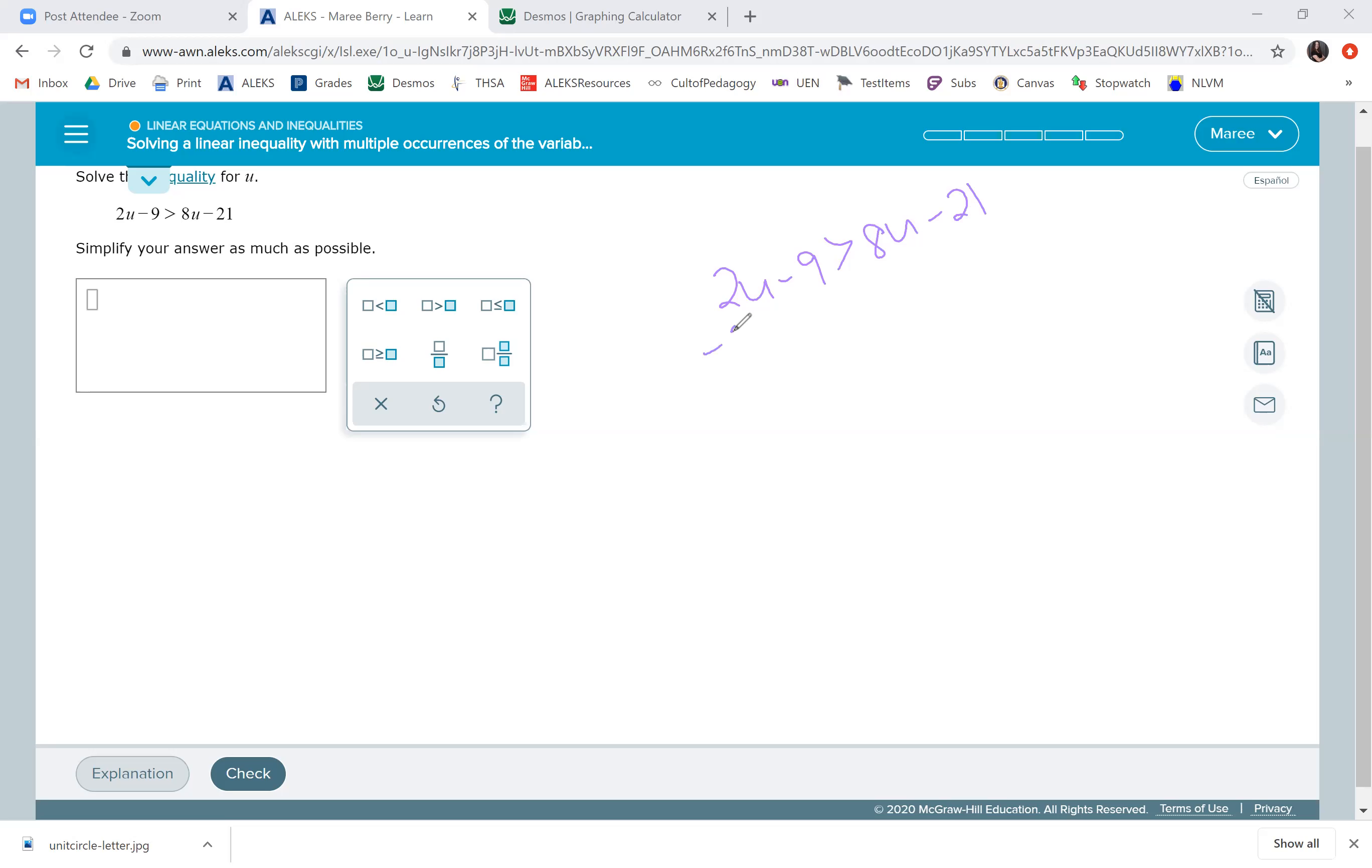So I'm going to subtract 2U from both sides and then I'm going to add 21. So that will get rid of this here. I'll just have a number here and it will get rid of the 21 and I'll just have my variables on this side. So negative 9 plus 21 is a positive 12 is greater than 4U. Then I divide by 4. It's positive, so I just keep my sign. 3 is greater than U.